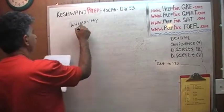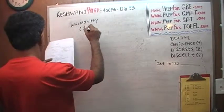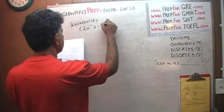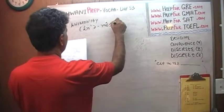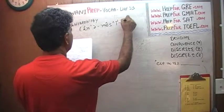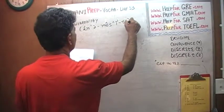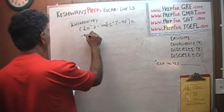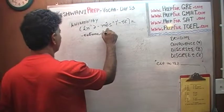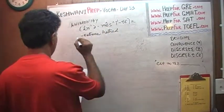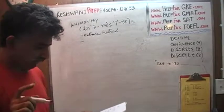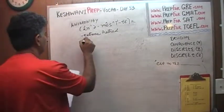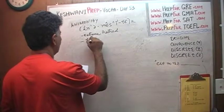The next word to learn is animosity. Animosity simply means an extreme hatred. Bitter enemies would have animosity between them — bitter hostility.